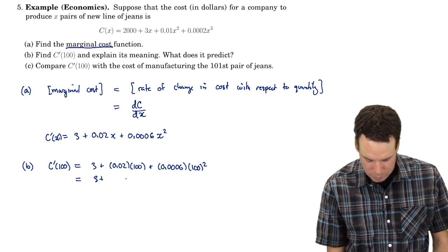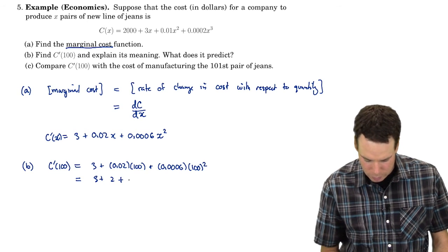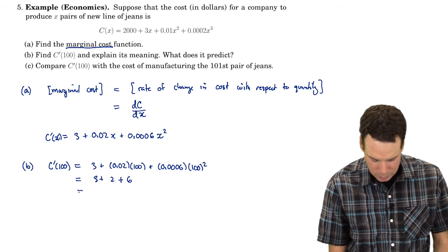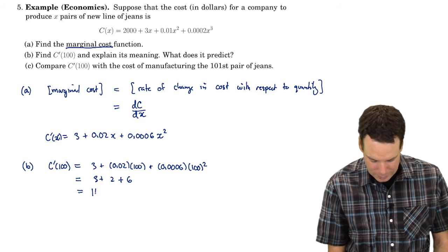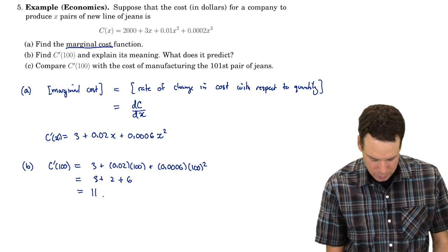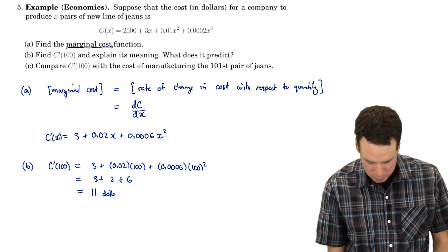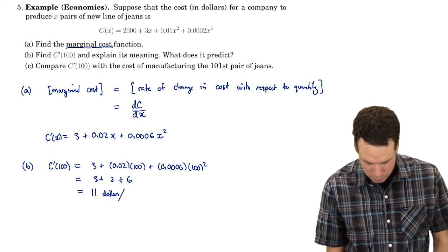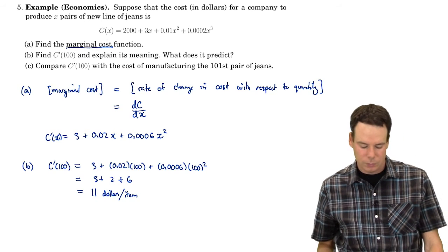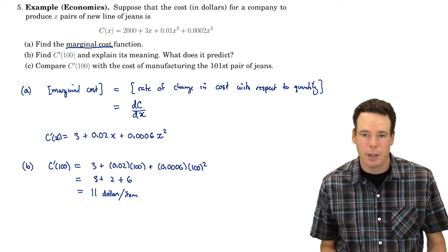That'll be 3 plus 2, and 0.0006 times 100 squared: the decimal place moves 4 over, so that's plus 6. So that's 11 — $11 per item. In this case it's a pair of jeans, so $11 per item.